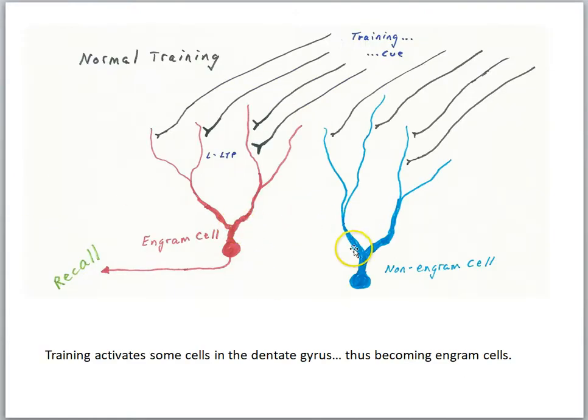Okay, let's look at the red cell and the blue cell. These are cells in the dentate gyrus of the hippocampus. And when you are doing the contextual conditioning paradigm in an animal, some of those dentate gyrus cells will respond, but not others.